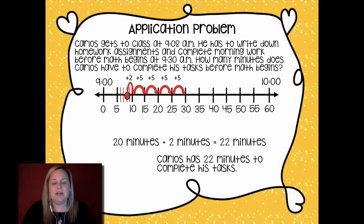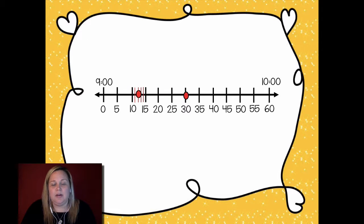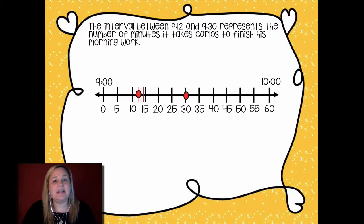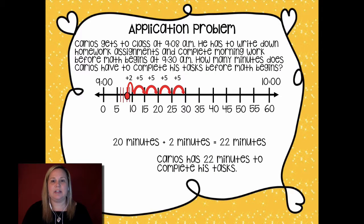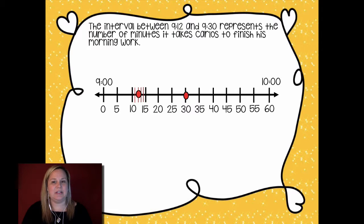Carlos has 22 minutes to complete his tasks. Keep that in mind as we're going to be completing the next part of our concept development lesson. This looks pretty familiar. This is the number line we just had from our last problem. Now the thing I want to notice here is there's an interval between 9:12 and 9:30. Let me actually step back really quick. He got to school at 9:08. It took him four minutes to write down his homework assignments. So after that, how long does he have left?